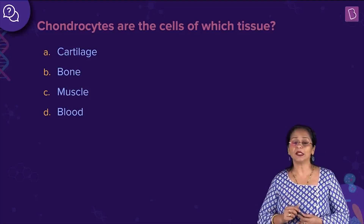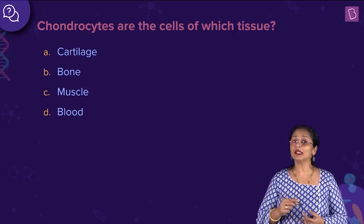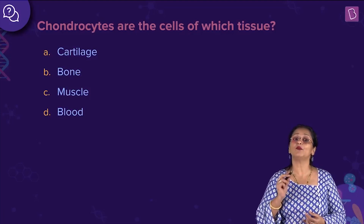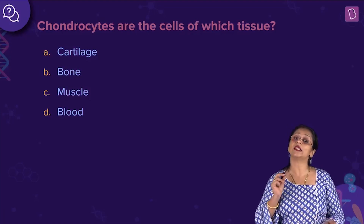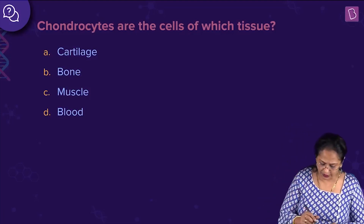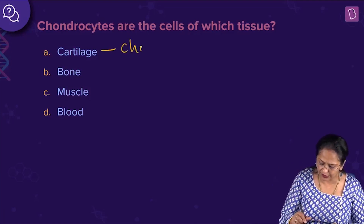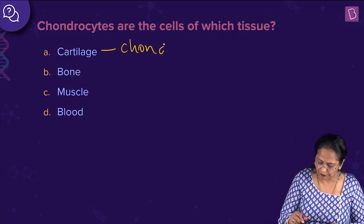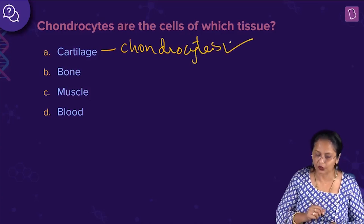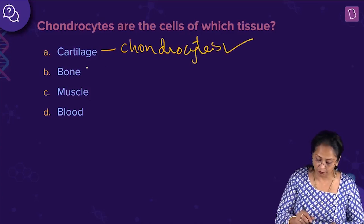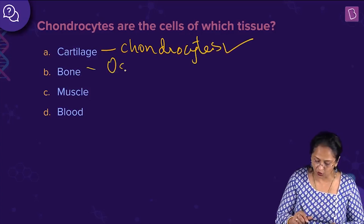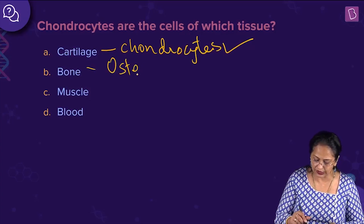Muscles are made up of units called myofibrils. For cartilage, the cells are chondrocytes — so this is the right answer. Looking at the other options: bones have osteocytes, which is the wrong option.